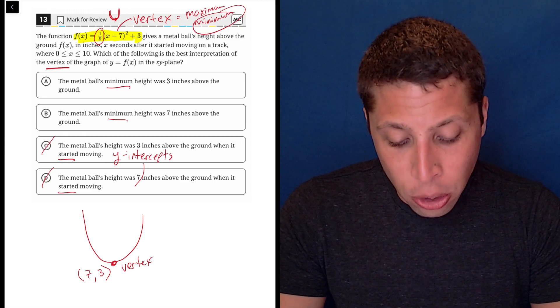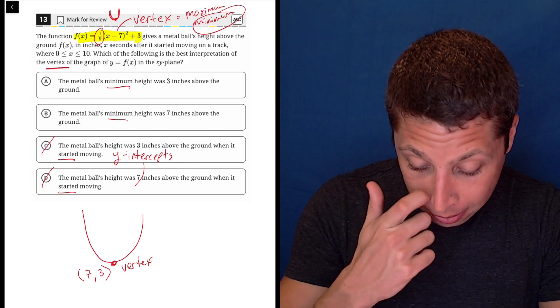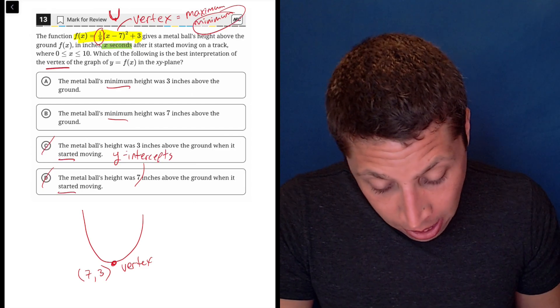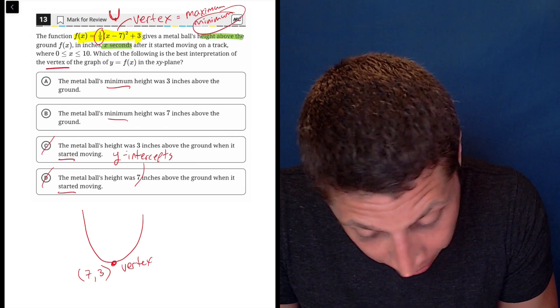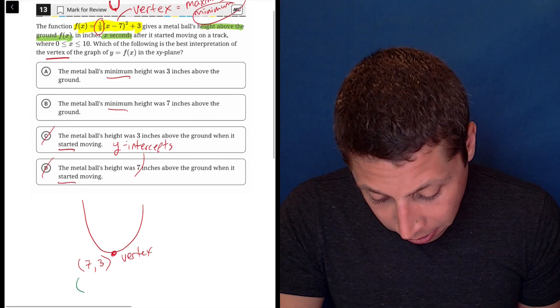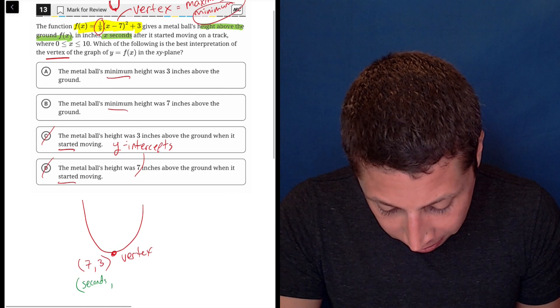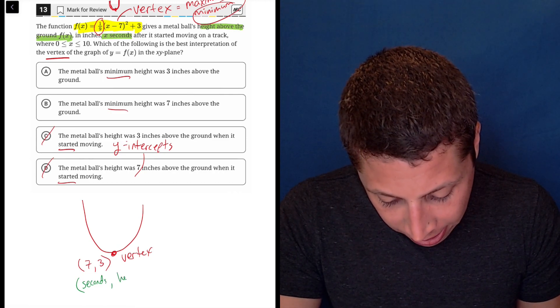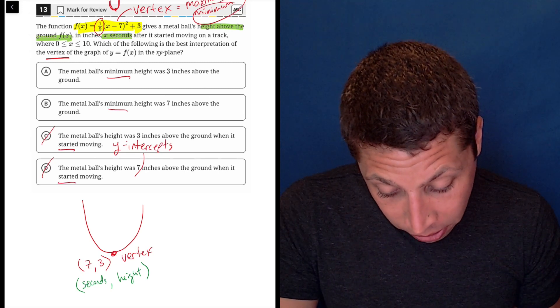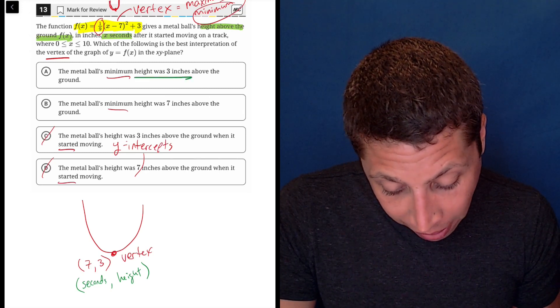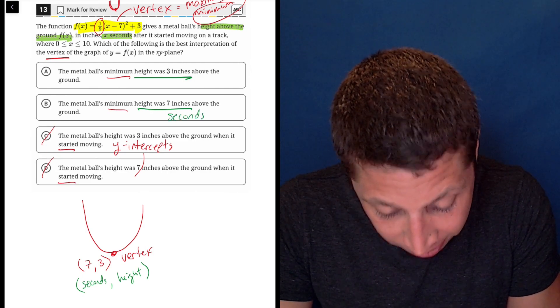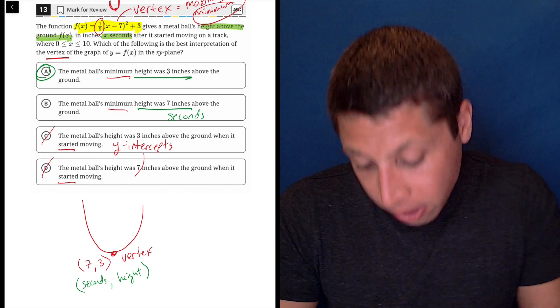In this case, just think about the unit that they give us, right? So they tell us that x is the number of seconds and the height is f of x. So if I apply that to my point, then the seven is the number of seconds and the three is the height. So if they're asking, what is the vertex, just look at the units now, the height was three inches or the height was seven. Well, no, they said the seven, it was seven seconds. The height was three, so choice A is the answer.